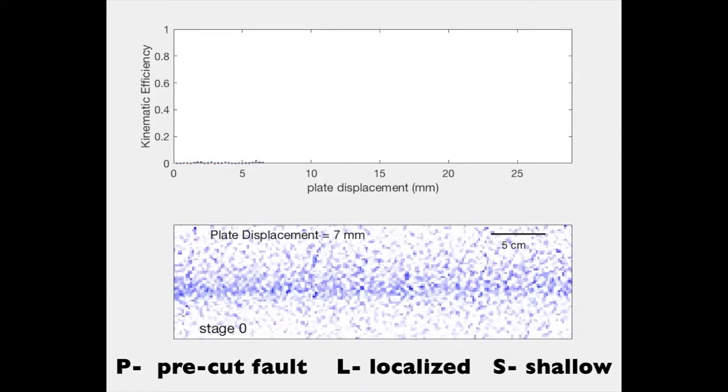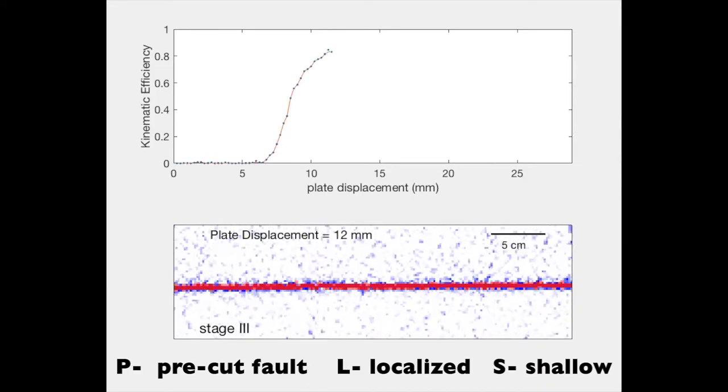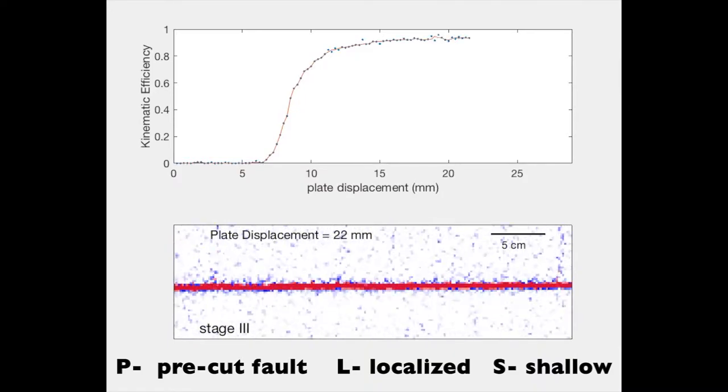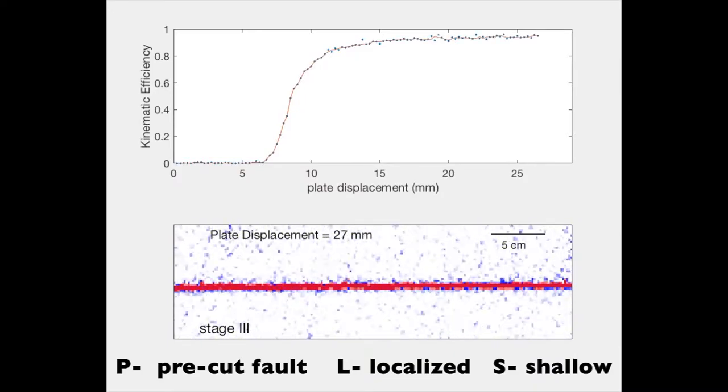So we were tracking what we call kinematic efficiency throughout these experiments, and efficiency is basically the ratio between displacement on a fault to the displacement that we impose on the box from our motor. So as the strike-slip faults are growing, we want to know how good are they at accommodating the strain that's coming into the system.